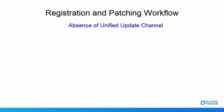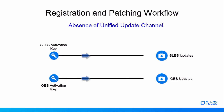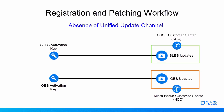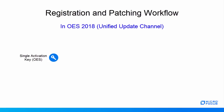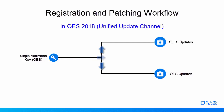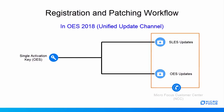Before moving on to OES 2018, let's see how the registration and patching workflow would be in the absence of Unified Update Channel. Again, two separate activation keys are required to obtain SLES and OES updates, but customers have to deal with two customer centers: the SUSE customer center to obtain SLES updates and the Micro Focus customer center to obtain OES updates. Moving on to OES 2018 with Unified Update Channel, only a single OES activation key is required. Using a single activation key, you can obtain both SLES and OES updates through the Micro Focus customer center.